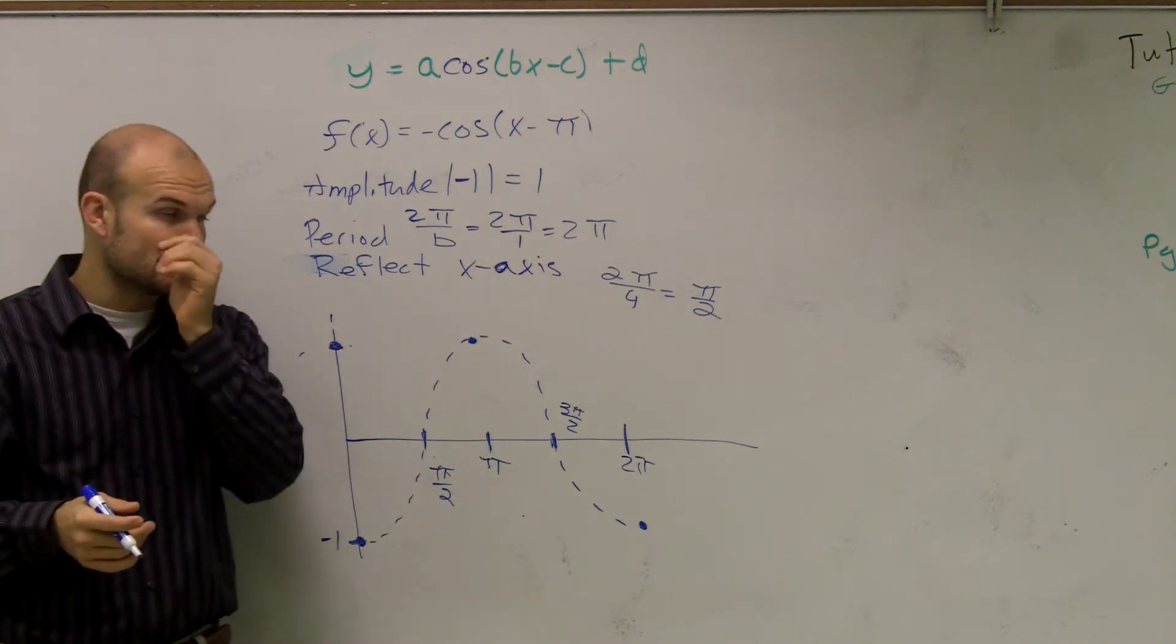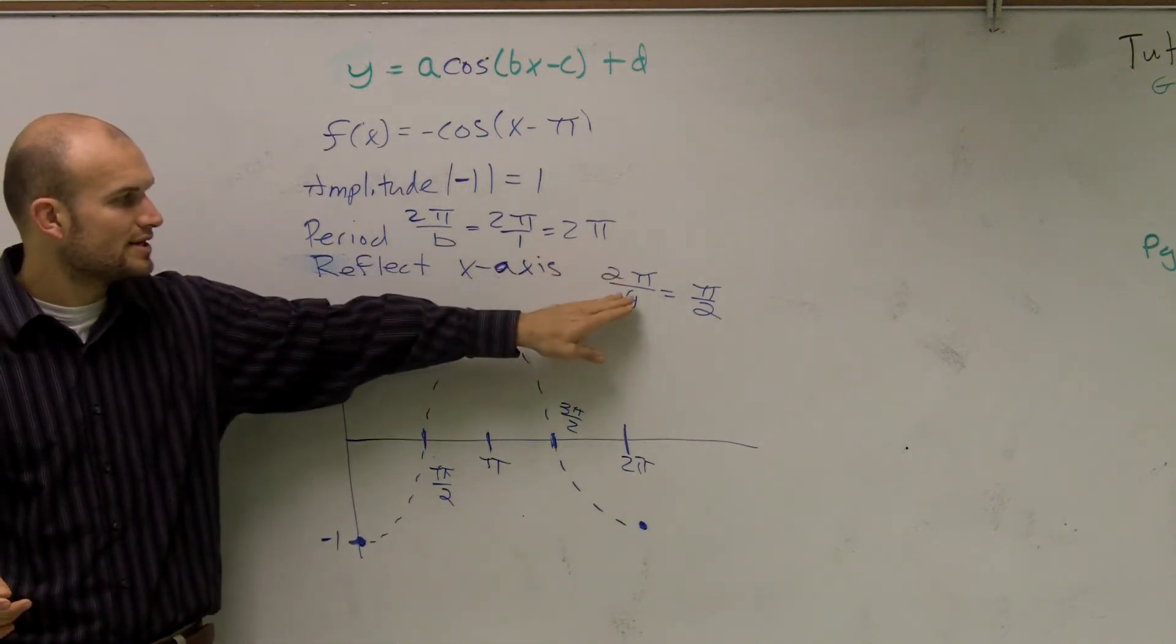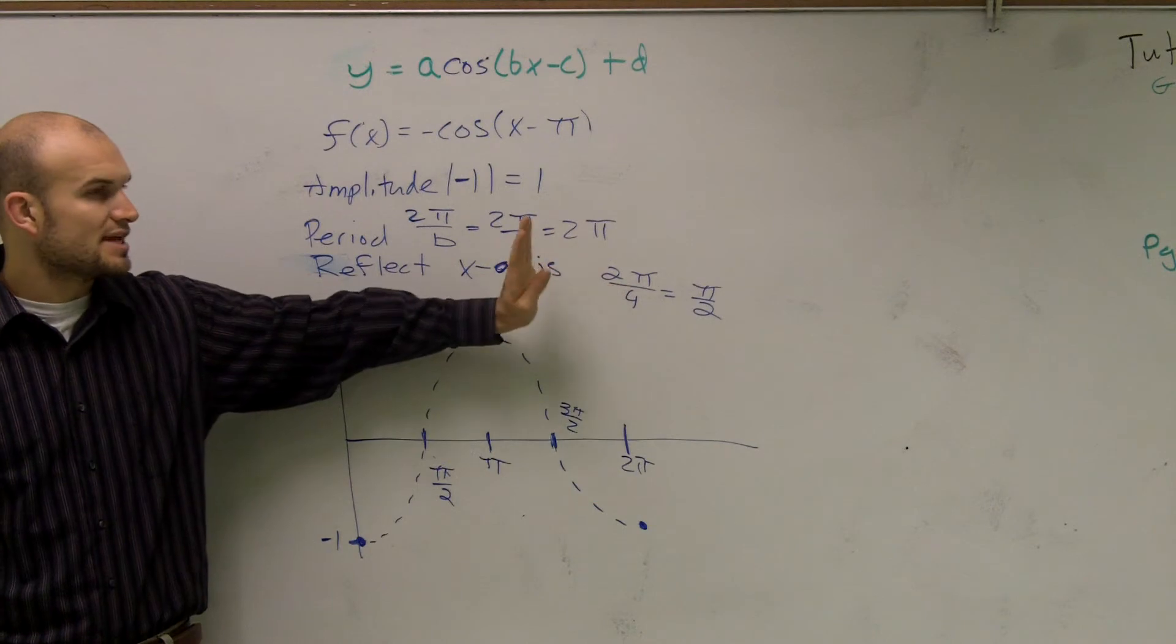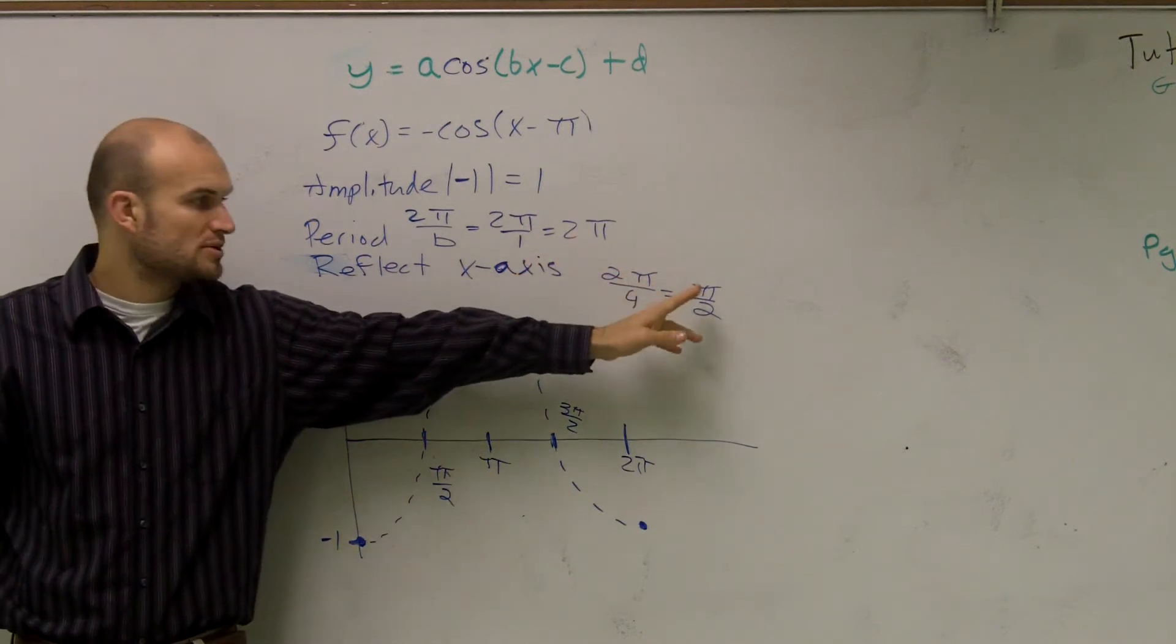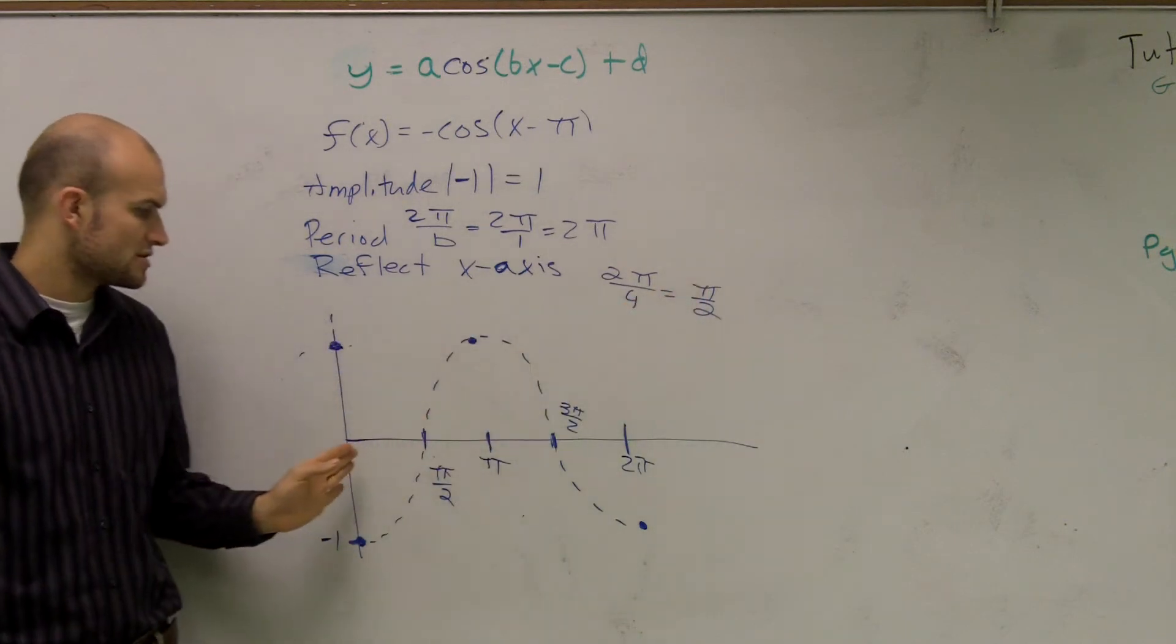Remember I said there's four important points? So you take those four important points, and you say you take your period, divide it by 4, and that means the interval between each important point is π over 2. So π over 2 plus π over 2 is π.